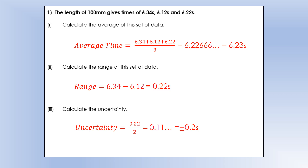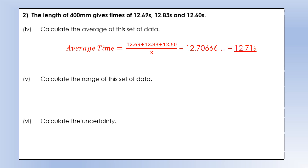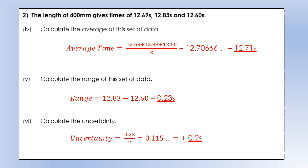For a length of 400 millimeters we have three more times, and we repeat the same process. We calculate the average by summing and dividing, then rounding to the right number of decimal places. We get the range by doing the biggest minus the smallest, and the uncertainty by dividing that by 2 and rounding up. So 0.115 rounds up to 0.2 seconds, meaning the average time of 12.71 could be plus or minus 0.2 seconds.